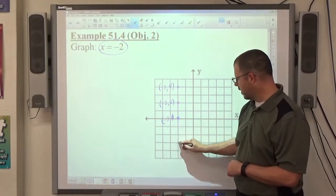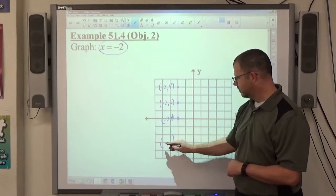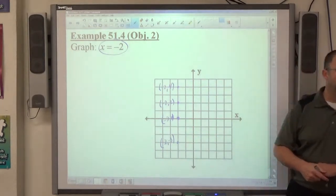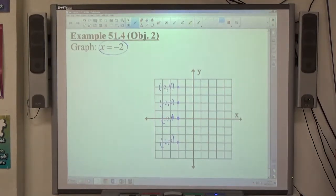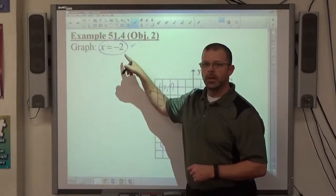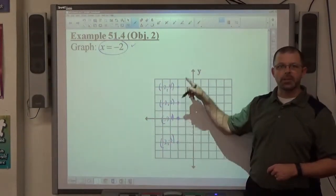And this point right here? Negative 2, negative 3. What's the x-coordinate of all those points? Negative 2, right? X equals negative 2 is the fact we have to make true. There's no rules on y. Y is allowed to be whatever it wants to be.